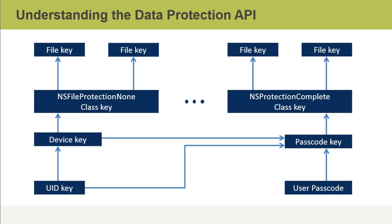Data protection classes are implemented through a key hierarchy. On the left-hand side of the diagram, we see an example of an unprotected system where the NSFileProtectionNone class indicates that data can be accessed at any time, even when the device is locked. On the right-hand side, the NSFileProtectionComplete class indicates that the data is protected so that it can only be accessed when the device is unlocked, meaning the user has to provide their passcode to unlock the device.